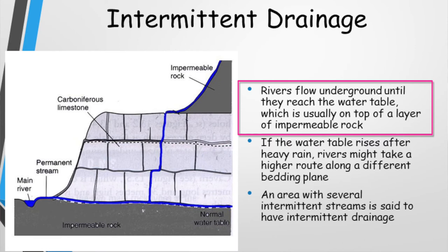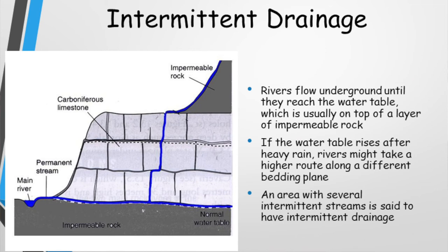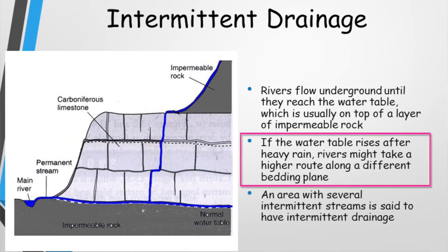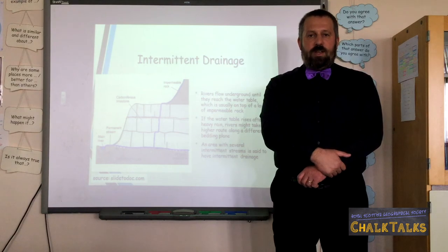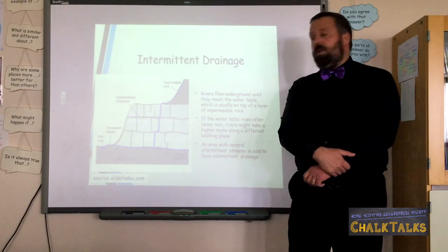Finally, as streams and rivers flow down through limestone, eventually they will reach the water table, which is usually found on top of a layer of impermeable rock. The river will then flow along the top of this layer of impermeable rock until it resurfaces at the bottom of the hill as a spring or resurgence. However, sometimes after periods of heavy rain, the water table rises because the water cannot soak down into the impermeable rock. As a result, underground streams reach the surface higher up and then flow down the hill into the river because the ground below it is waterlogged. These streams are called intermittent streams, and the area is said to have intermittent drainage because the streams do not always flow in this way.